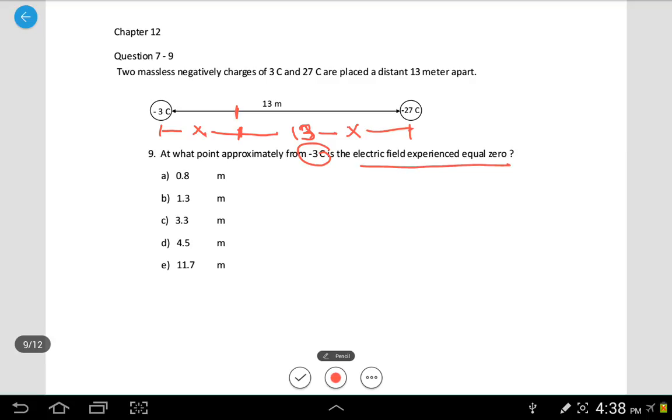And the distance from this to negative 27 coulomb will be 13 minus x. So we'll be using these distances. When you say there are zero, it implies that electric field this side E1 subtracted with electric field this side E2 should be zero. Now I can equate them. I could have said E1 equals E2.